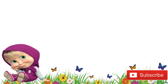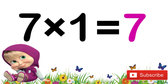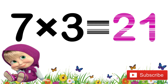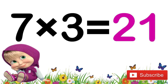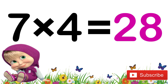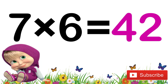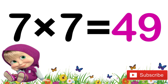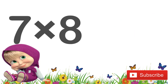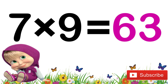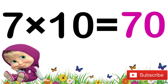Now let's revise again children. 7 ones are 7. 7 twos are 14. 7 threes are 21. 7 fours are 28. 7 fives are 35. 7 sixes are 42. 7 sevens are 49. 7 eights are 56. 7 nines are 63. 7 tens are 70.